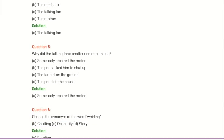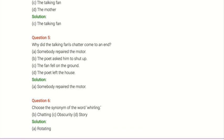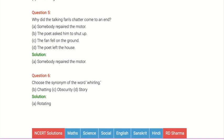Next question: choose the synonyms of the words. The synonyms means the similar meaning I have mentioned. Options include whirling, chatting, obscurity. The answer is whirring. Whirring is a similar word to brilliant rotating motion. Thank you.